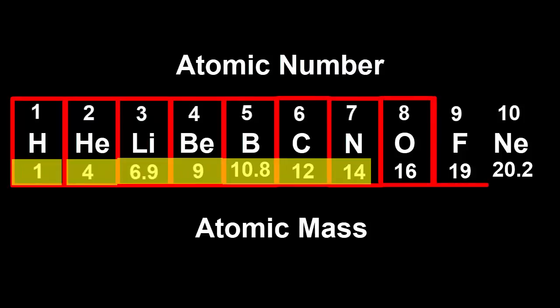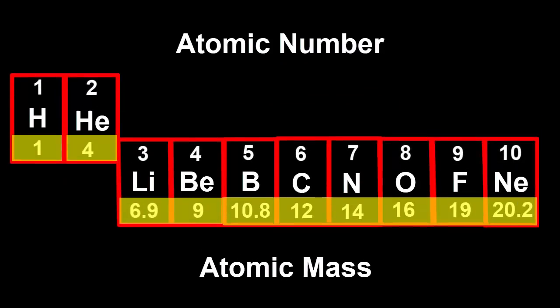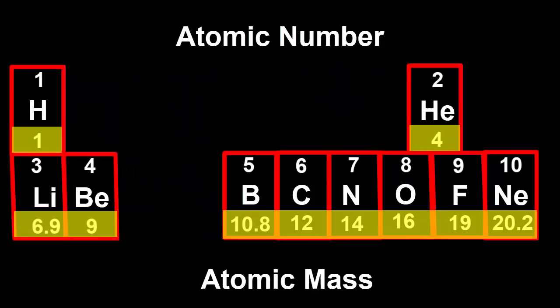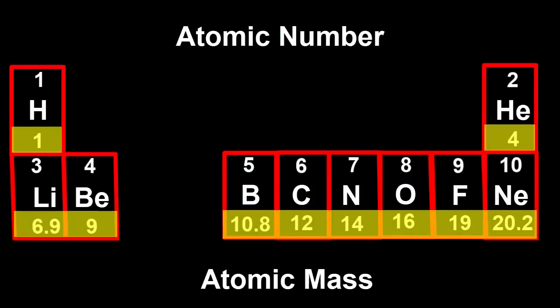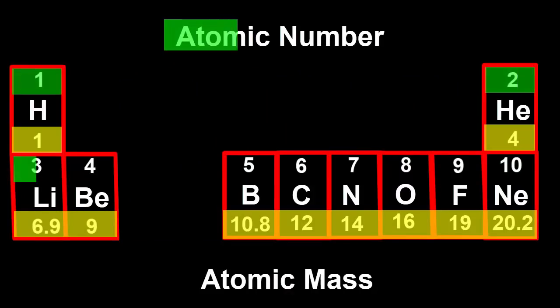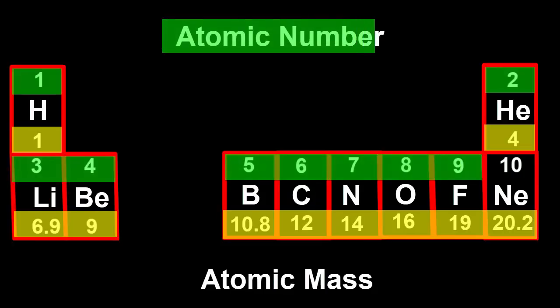You can see all elements' atomic masses at the bottom of their squares in the periodic table. Notice that while an element's atomic number is always a whole number, its atomic mass isn't, and we'll explain that in another video.